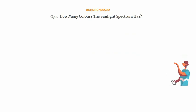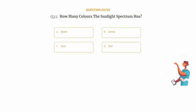Question number 22. How many colors does the sunlight spectrum have? Option A: 3. Option B: 7. Option C: 4. Option D: 5.